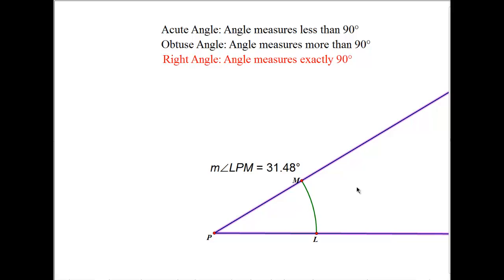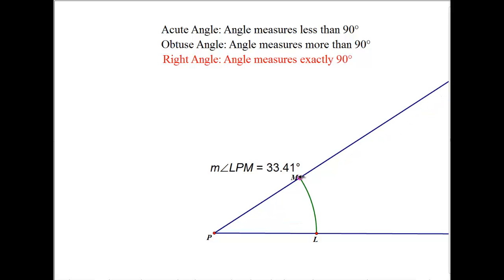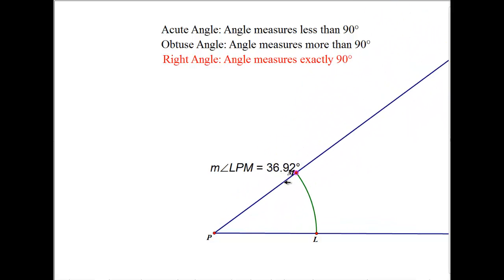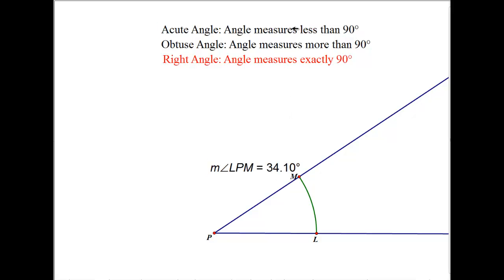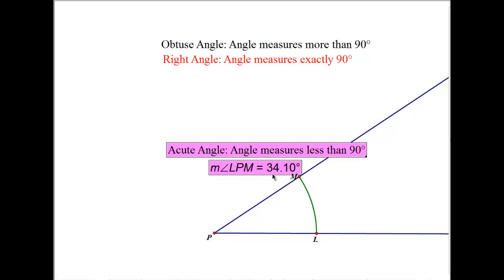Let's talk about angles. An angle is defined as the amount of rotation between two rays that have the same vertex. One way to measure the amount of rotation between the two rays is by using the units of degrees. If the amount of rotation is less than 90 degrees, we say that the angle is an acute angle. So in this case, this will be an acute angle because it's 34.10 degrees, which is less than 90 degrees.